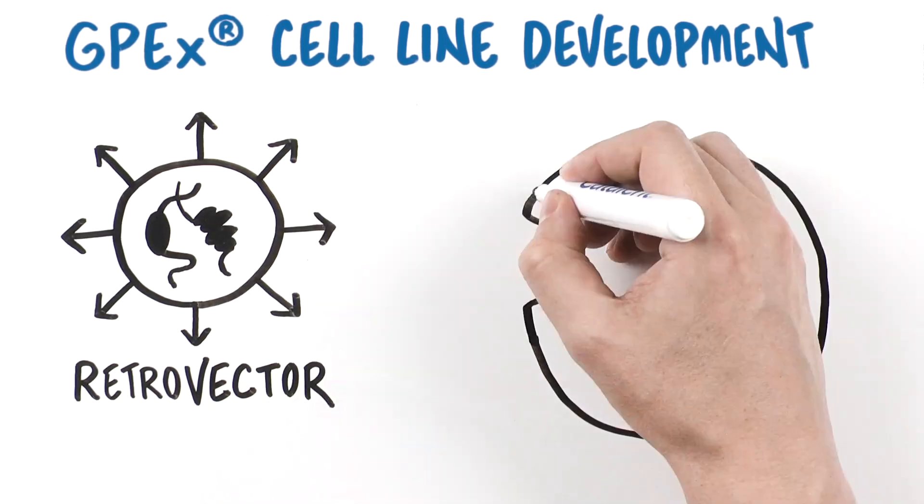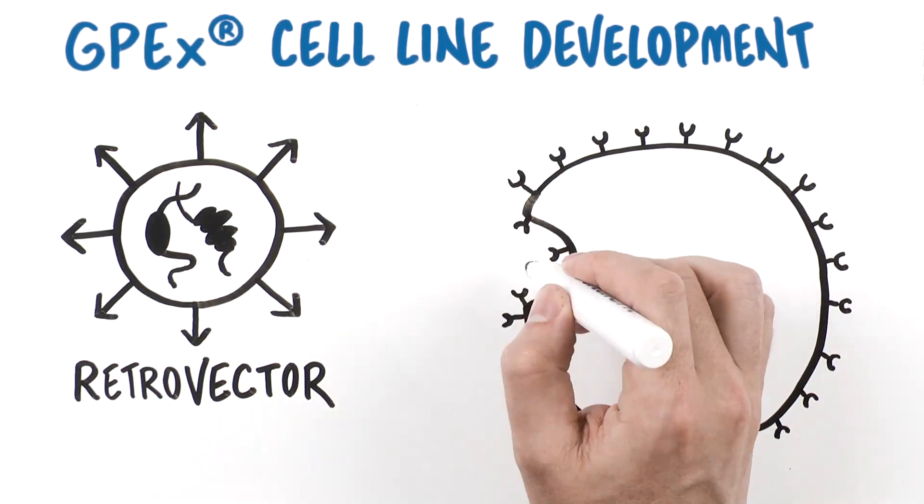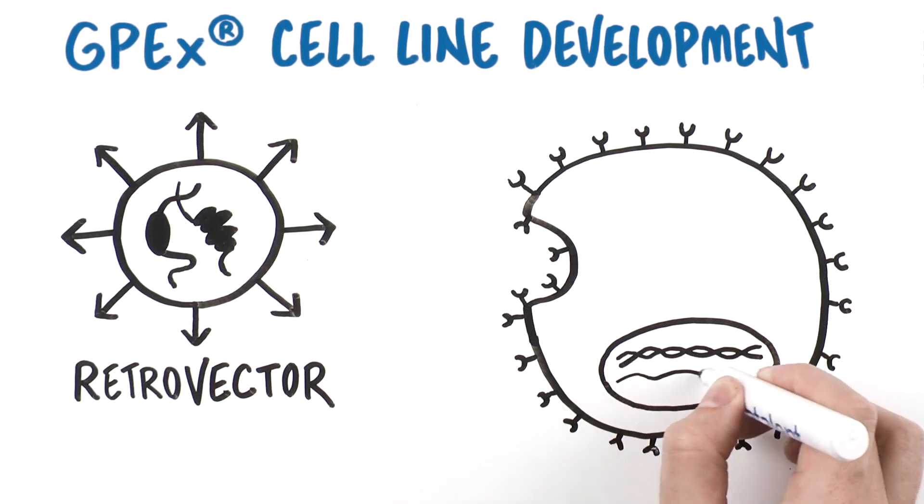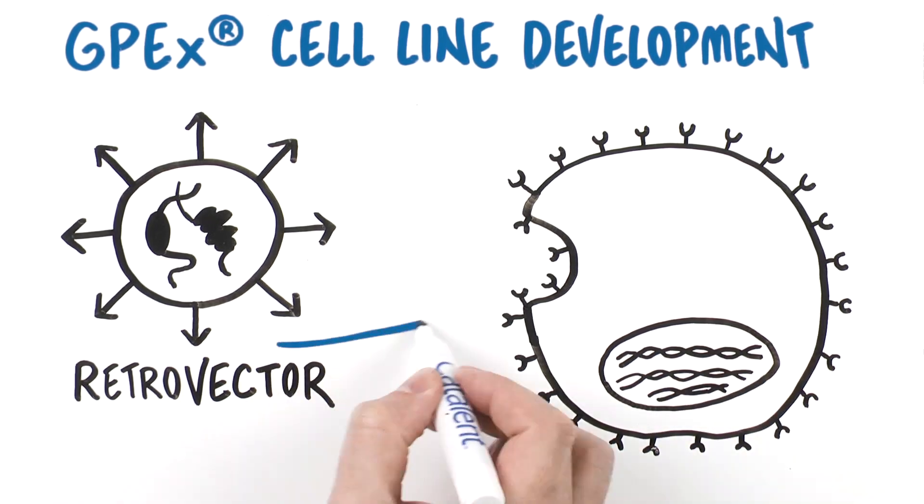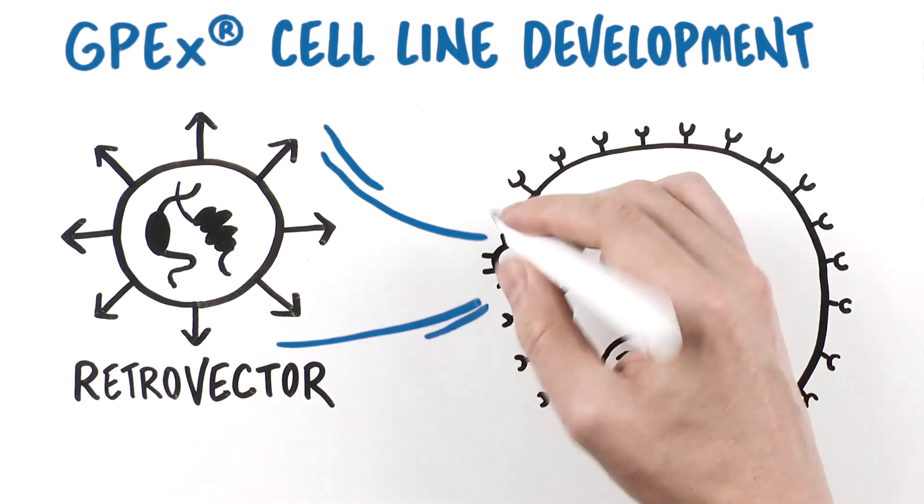When a gene of interest is identified, a DNA construct is generated and used to produce a retrovector. That retrovector is placed on the target mammalian cell,